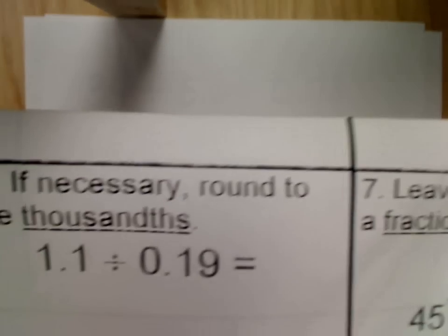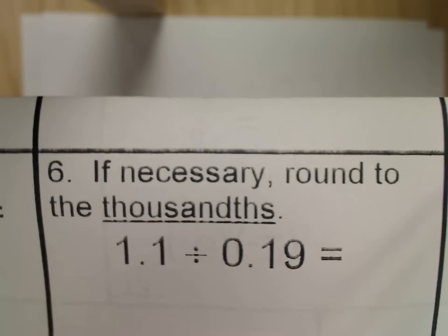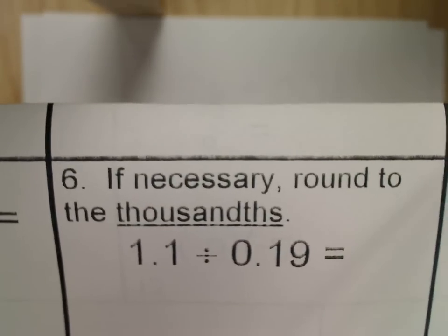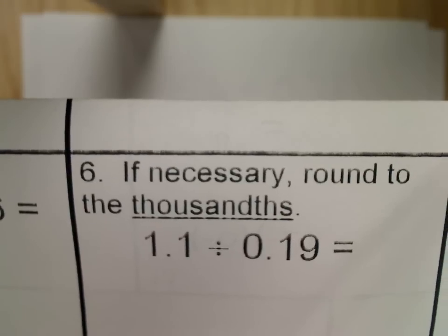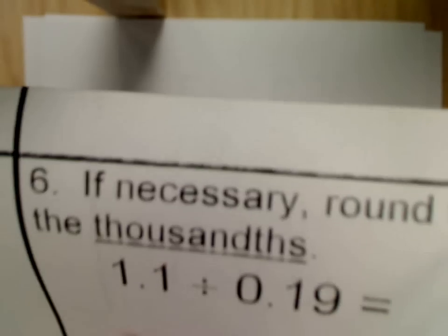Number six is always going to look like this, and it's always going to give you directions on how to round. It says if necessary, round to the thousandths. Usually it's necessary, and that means that if your number doesn't stop before the thousandths, then you need to round. So it's not going to be set up for me, so we're going to have to figure out how to do that.